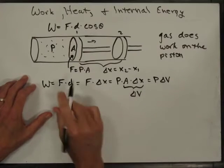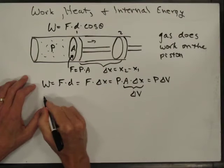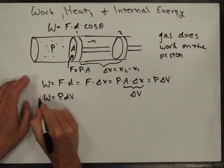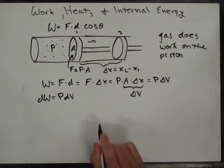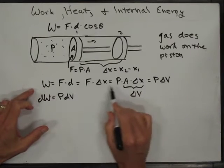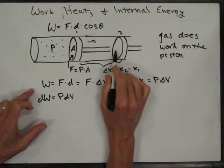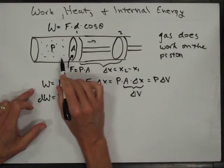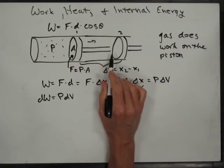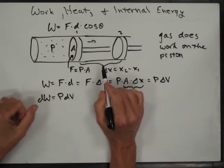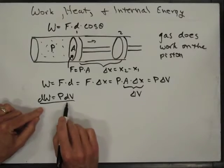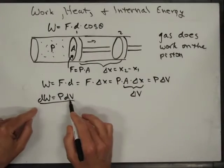If we write this in a more calculus-oriented way and look at a tiny increment, we say dW equals P dV. That's really a better way to look at it, because the previous form kind of assumes the pressure is constant the whole time, and it's probably not. As the gas is expanding, the pressure is probably changing — maybe declining — unless it's being heated somehow. So usually you see the work done for a gas written as the differential form.